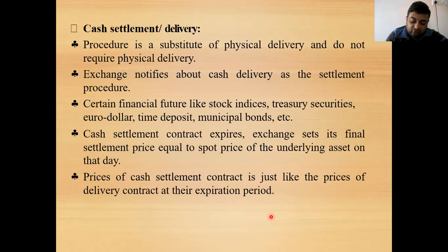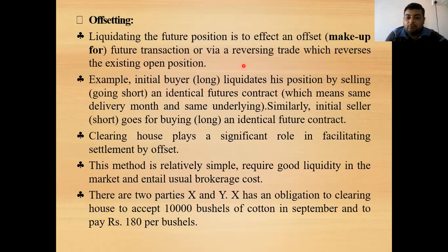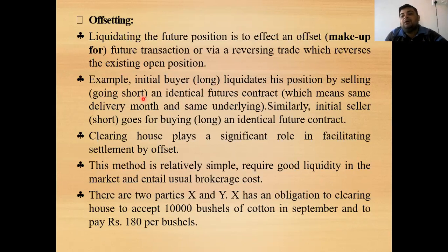The third method of settlement is offsetting — liquidating a futures position by effecting an offsetting or reversing trade that reverses the existing open position. For example, an initial buyer in a long position liquidates by selling and going short. The person who entered a long contract (buy low, sell high) offsets his position by entering a short position — selling the commodity he holds. This is done through an identical futures contract with the same delivery month and same underlying asset.